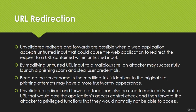Now let's talk about what is URL redirection. Basically URL redirections are possible when a web application accepts untrusted input, and by modifying this untrusted input we can redirect to a malicious website. In that case an attacker may successfully launch a phishing scam or steal user credentials. To hunt for URL redirections, you just need to find a URL parameter having some kind of tendency to redirect somewhere.